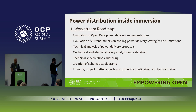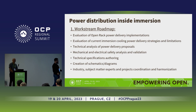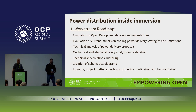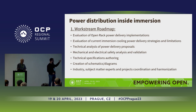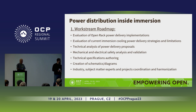The roadmap is basically the evaluation of the open power rack power delivery implementations. As you may know, the OCP version 3 rack now has some differences with the previous OCP version 2 — for instance, the voltage used in the bus bars. We are also evaluating power delivery strategies and limitations inside the immersion tanks, running technical analyses of power delivery proposals, mechanical and electrical safety analyses, validation, technical specifications, and authoring, with many subject matter experts and project coordination.